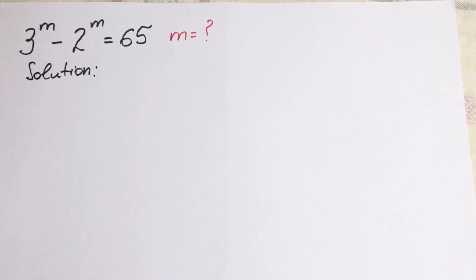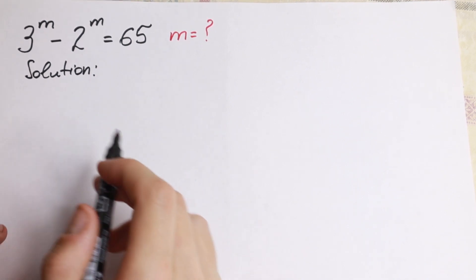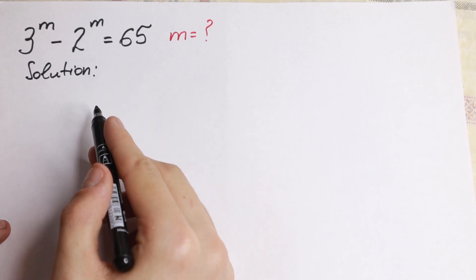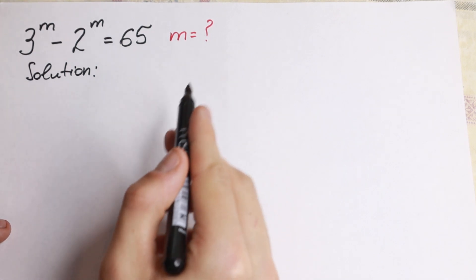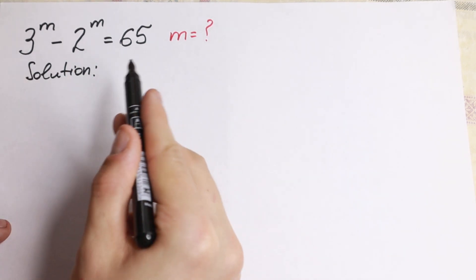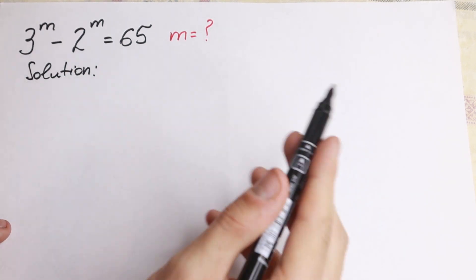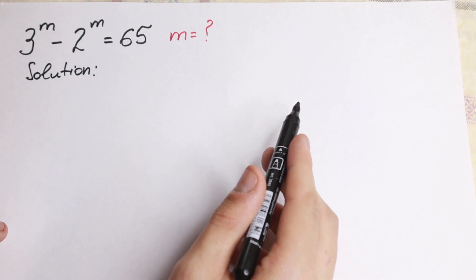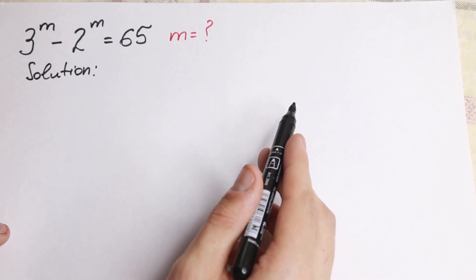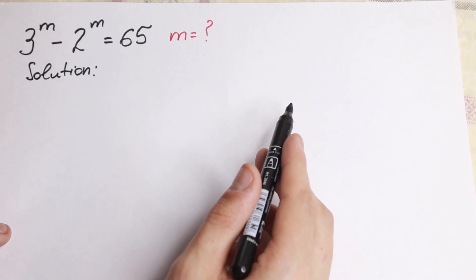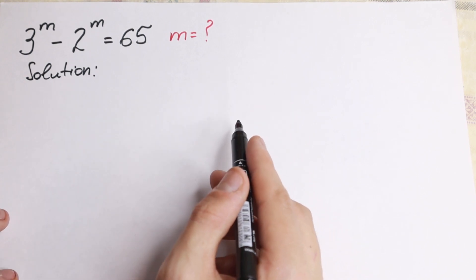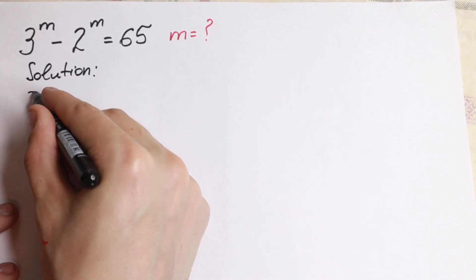Hello everyone and welcome back to higher mathematics. In this video we are going to solve a really interesting Olympiad algebra problem. We need to find m when 3 to the m minus 2 to the m equals 65. I want to show you a really quick and good approach to solve it.